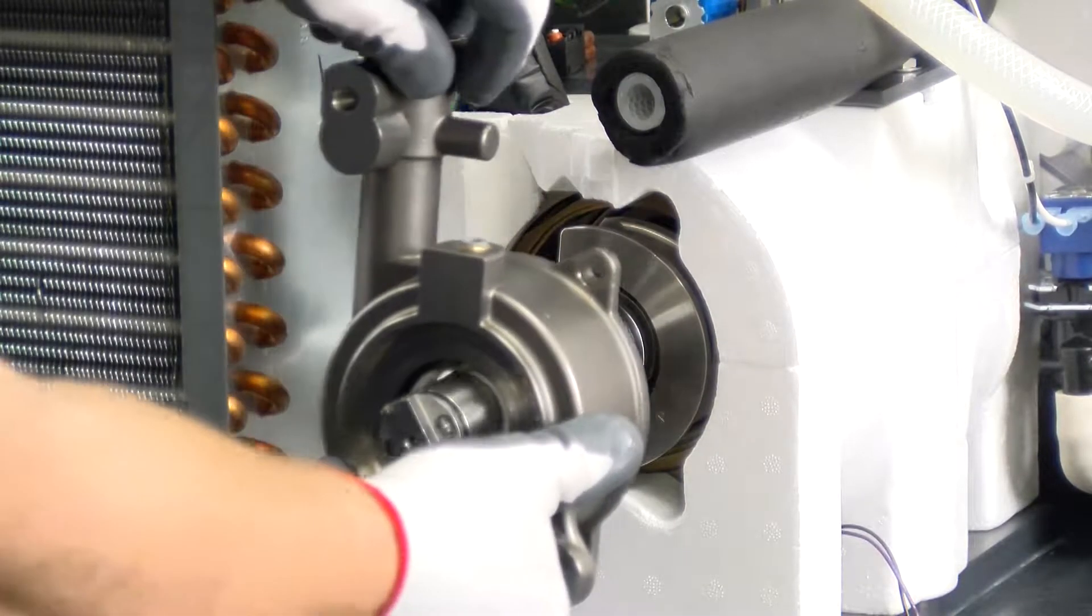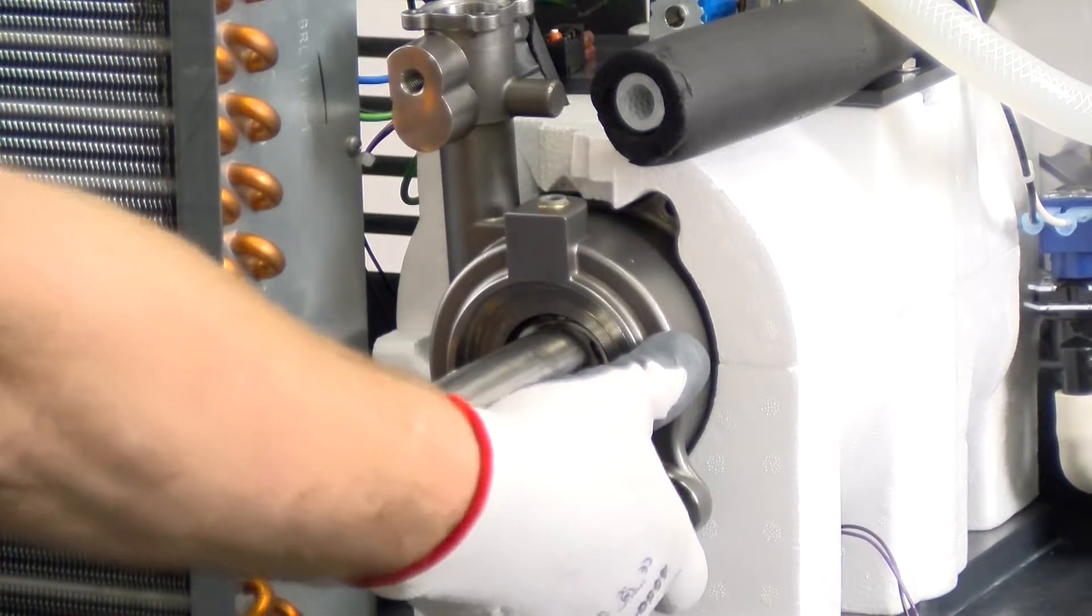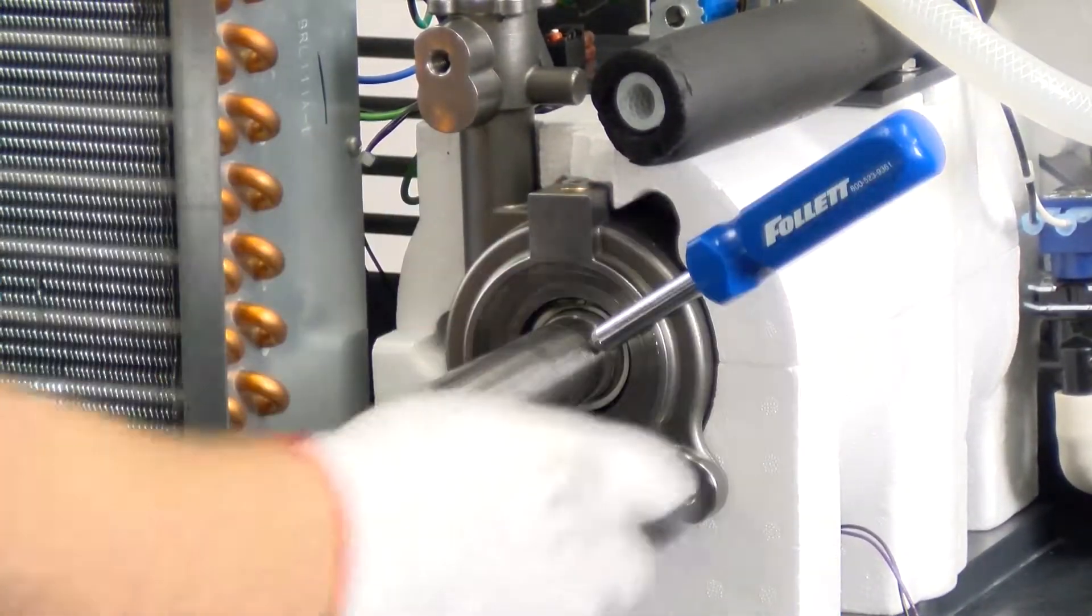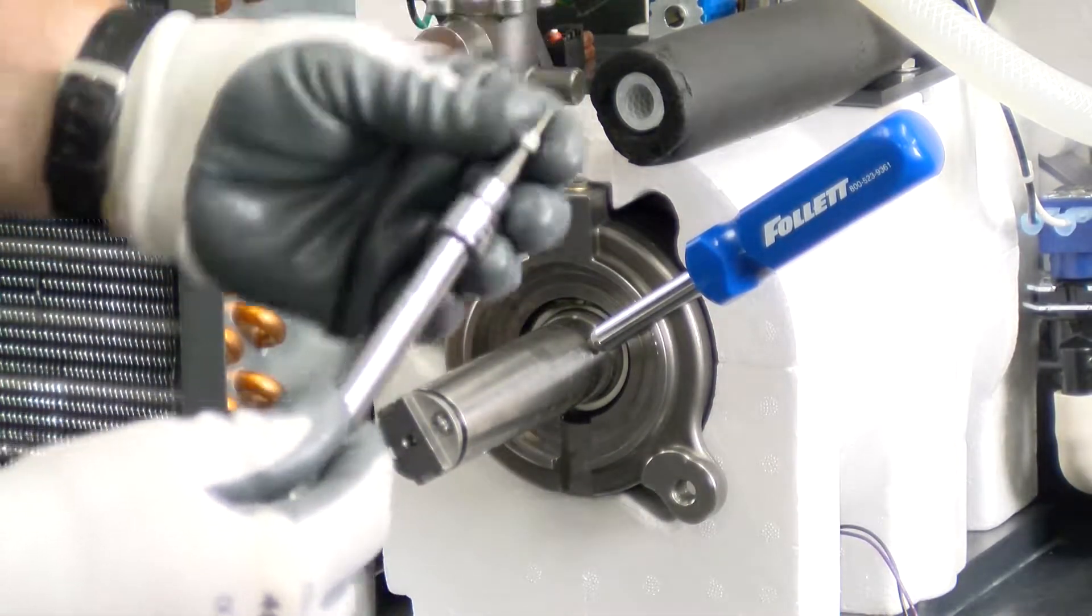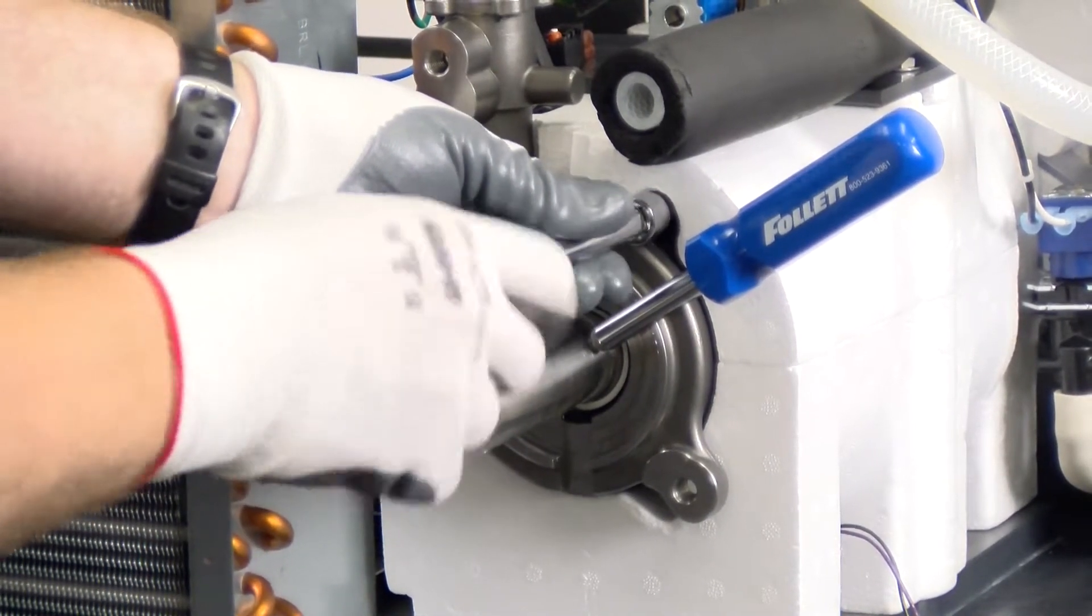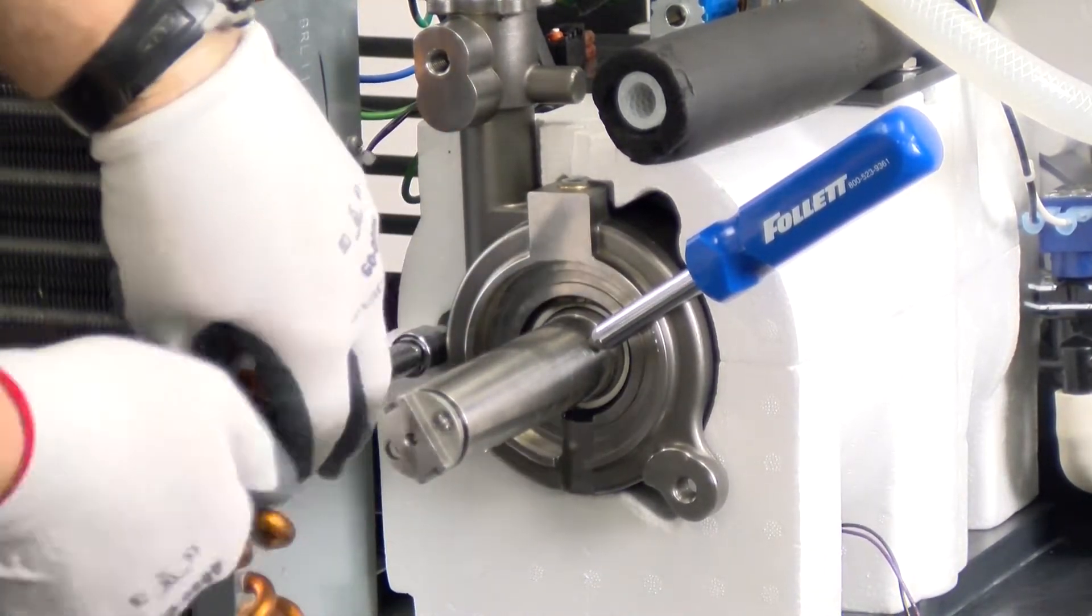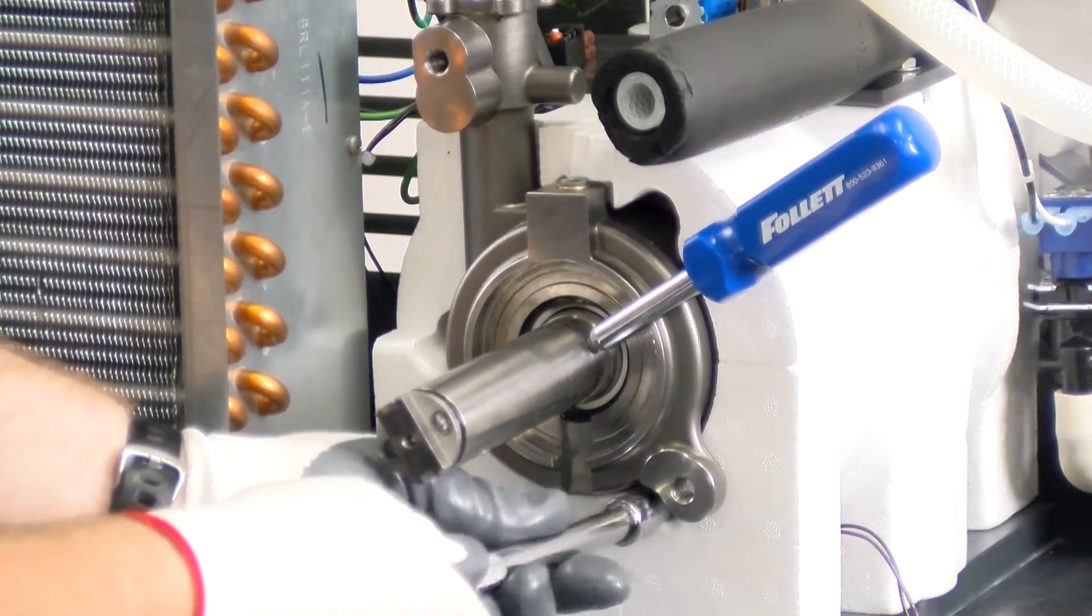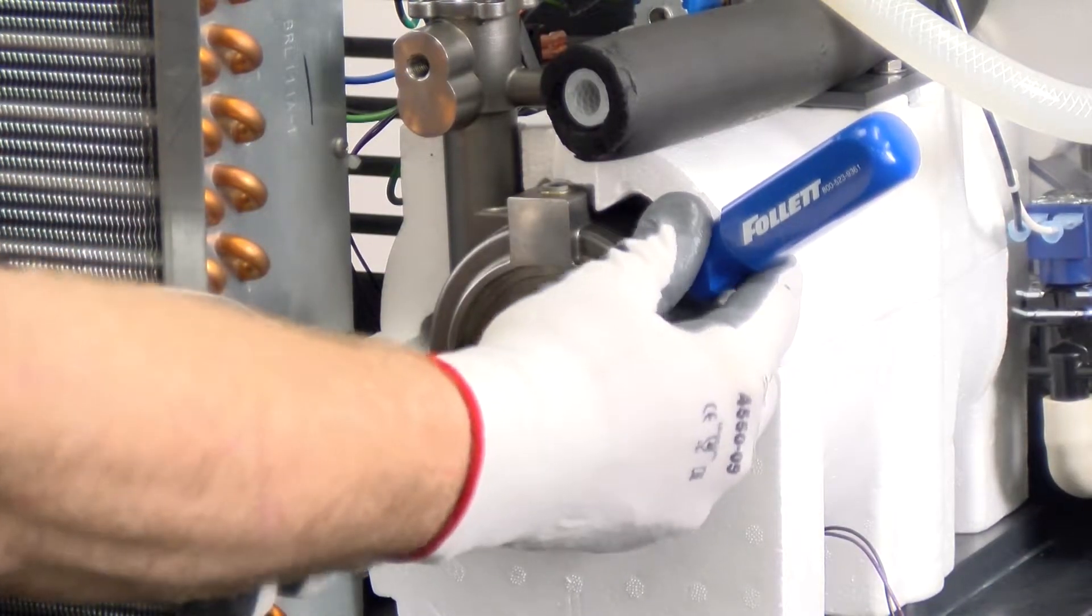You may now slide the main housing onto the auger. Use a screwdriver to compress the spring on the auger shaft, which allows for easier installation of the three screws.